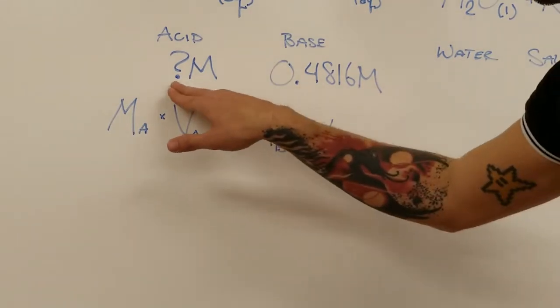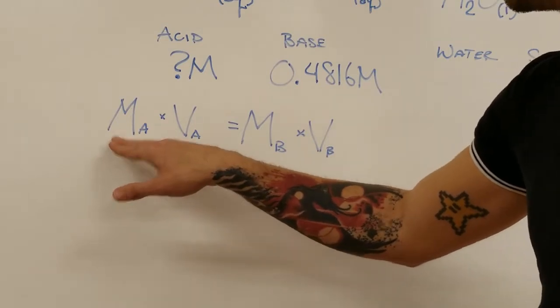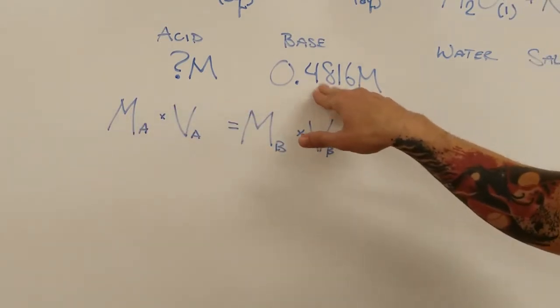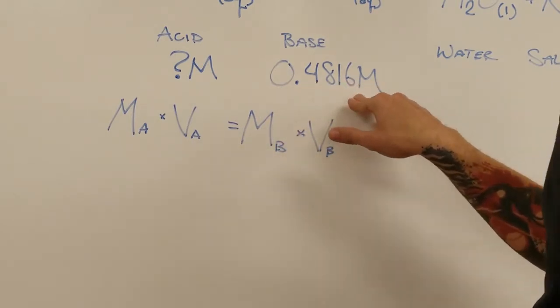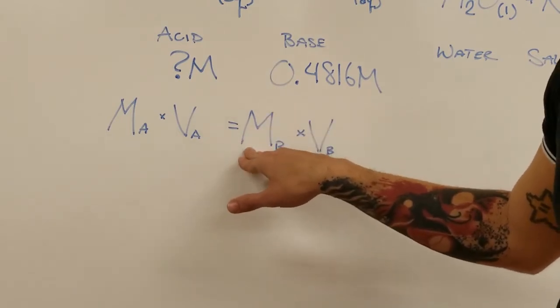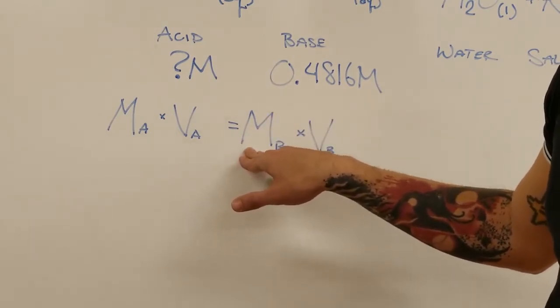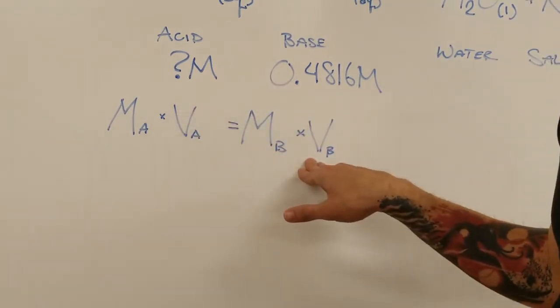We don't know what the molarity of the acid is. It's approximately 0.5 M according to the bottle. We do know, with more precision, the concentration of the base. It's 0.4816 M. And so we know what this is. In our reaction, we're going to see what volume of acid reacts with what volume of base to make them neutral.